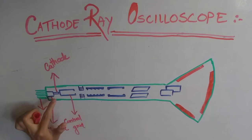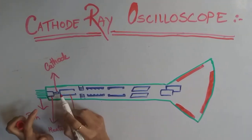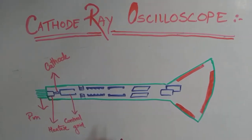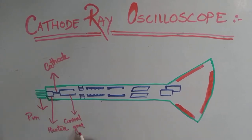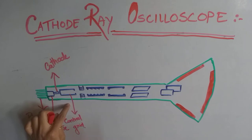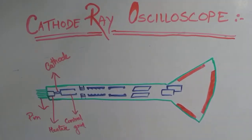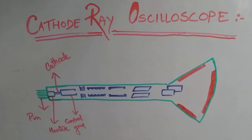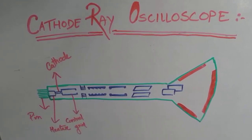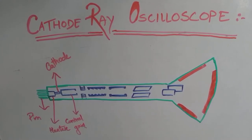The cathode has a cylindrical-like structure surrounded by a nickel cylinder which has a small hole in it. This hole serves the control grid, meaning the density of electrons in the electron beam is controlled by the control grid. By varying the negative potential at the control grid, the electron beam can be controlled. Making the potential more negative reduces the current and thus reduces the brightness.